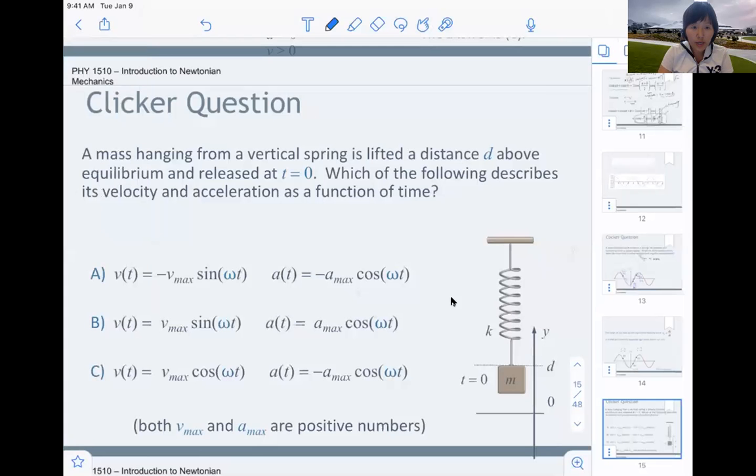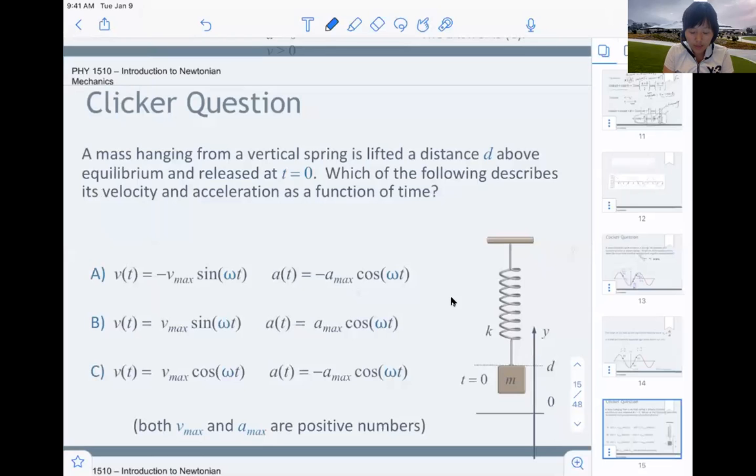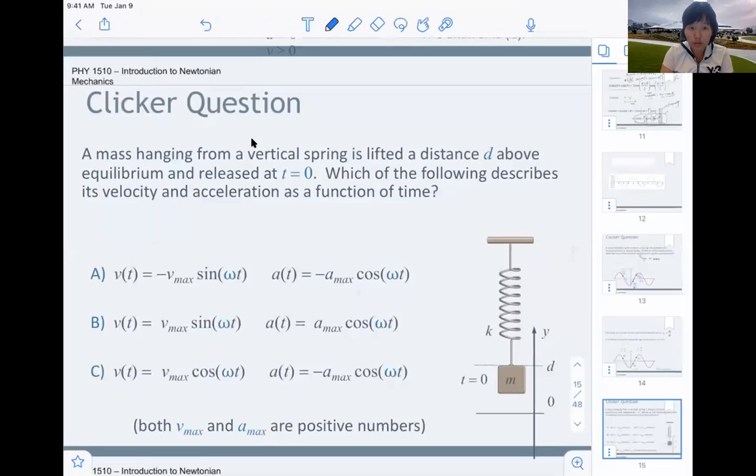Let's get back to the rest of our class. Here we have a mass hanging from a vertical spring. At time equals zero, the distance is d. So it's going to oscillate up and down as a function of time. Which one of these correctly describes the velocity-time or acceleration-time graph? Let's see what we do.